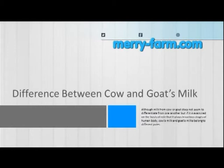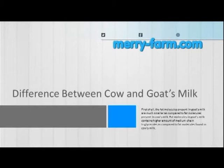Although milk from a cow or goat does not seem to differentiate from one another, if it is examined on the basis of the role it plays in various stages of the human body, cow's milk and goat's milk belong to different poles.